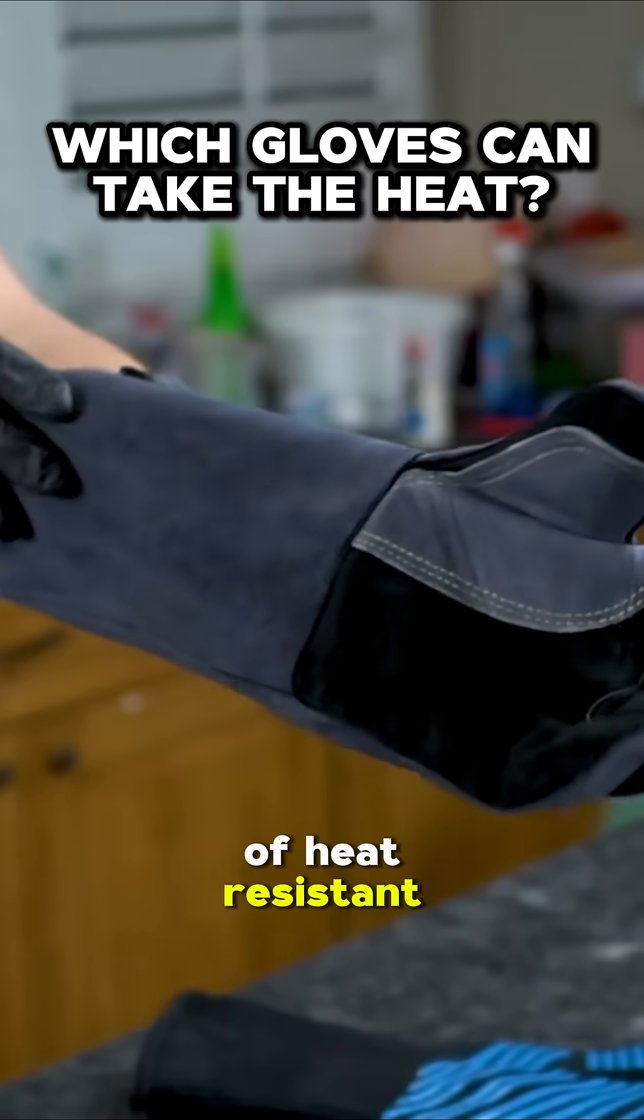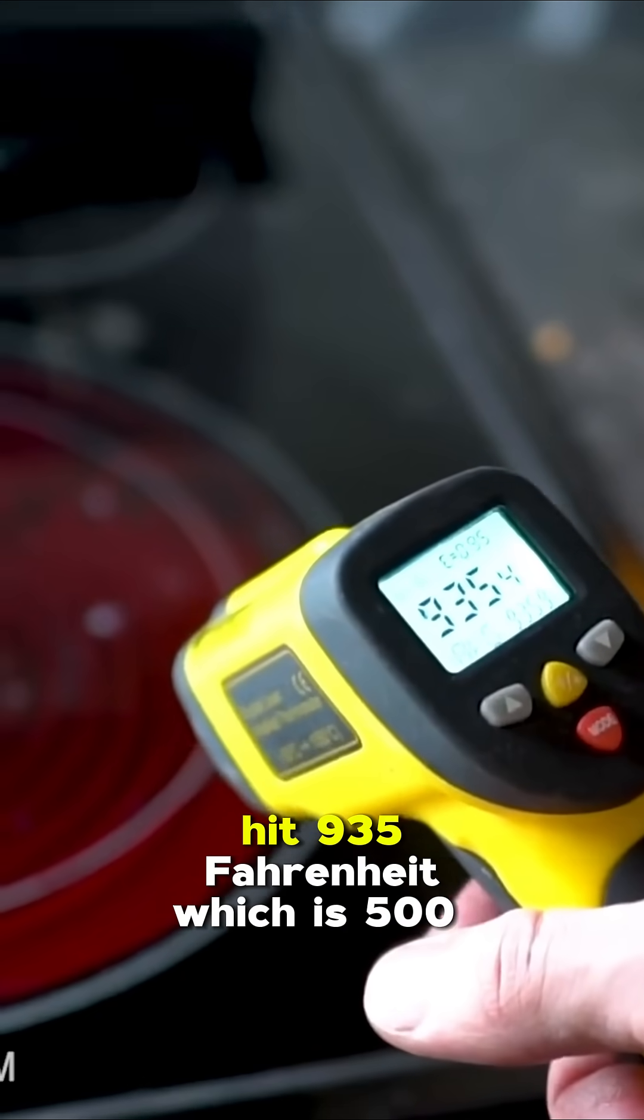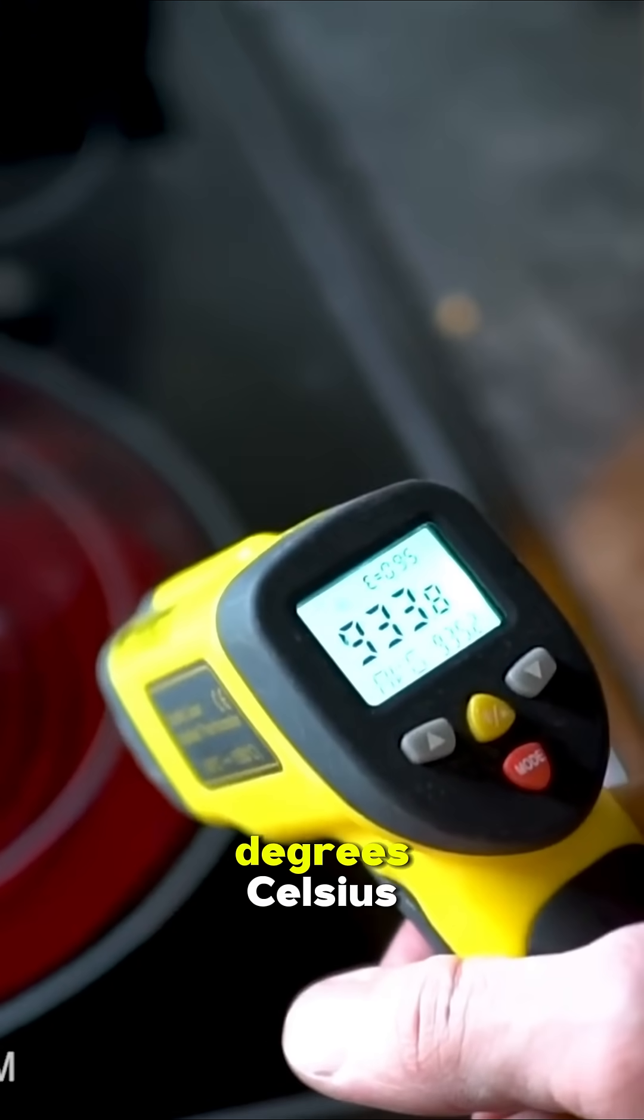Today, we're taking a look at three types of heat-resistant gloves and seeing how they hold up against the stove. It's 935 Fahrenheit, which is 500 degrees Celsius.